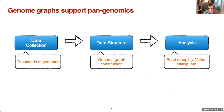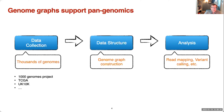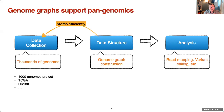Why are genome graphs an interesting data structure? The key problem they aim to help with is large pan-genomic analyses. There is an ever-increasing number of available genomes from humans and other species, and we'd like to analyze them together, exploiting all that information. We need a data structure that can store very large collections of related genomes. Genome graphs are a good candidate, and we'd also like to support efficient analyses such as read mapping, variant calling, and read alignment to those genome graphs.